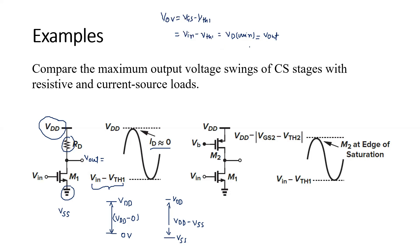For the second figure, there is an active load because a current source is used. For this current source, the maximum value of output that can be reached while keeping the current source in the active region is VDD minus VGS2 minus VTH2, which is the overdrive voltage of M2. So the maximum output can reach only one overdrive voltage less than VDD. The minimum value of output is again decided by M1 staying in saturation, so it is the same as the previous figure: VIN minus VTH1. For the second case, the swing is less.